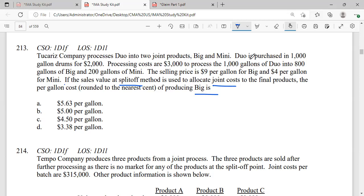Duo is purchased in 1,000 gallon drums for $2,000. Processing costs are $3,000 to process 1,000 gallons of Duo into 800 gallons of Big and 200 gallons of Mini. The selling price is $9 per gallon for Big and $4 per gallon for Mini. Now we are going to apportion it at split-off.